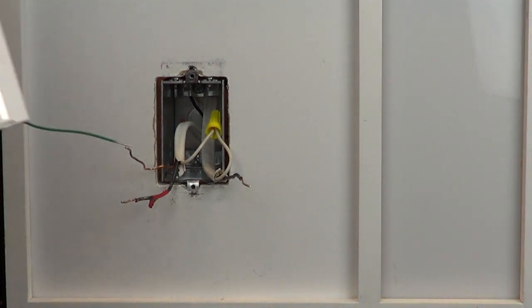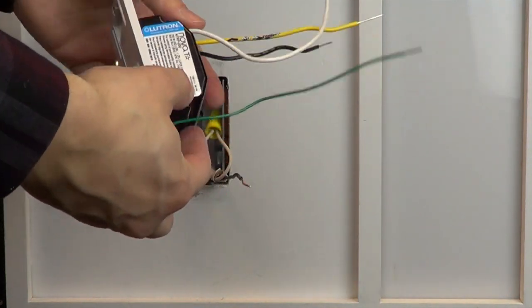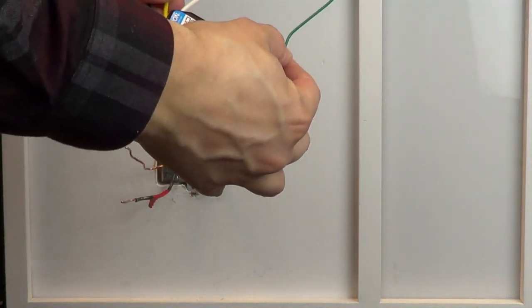In this video, we're using a NOVA-T reverse phase dimmer, however these instructions apply to all other products that have the same color wires.